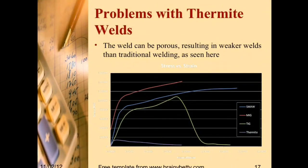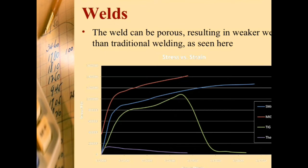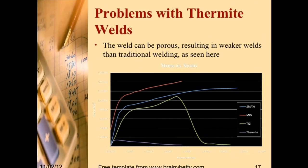Problems with thermite welds: the weld can be porous, resulting in weaker welds than traditional welding as seen in the comparison chart. The blue line shows shielded metal arc welding, the red line shows MIG welding, the green line shows TIG welding, and the purple line shows thermite welding, which is at the bottom.